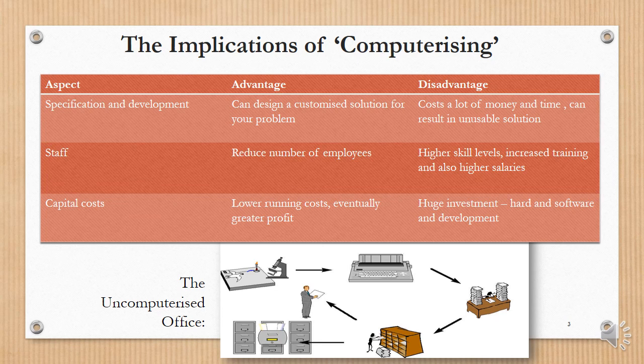In specification and development, when you want to buy a new computer system, you can design exactly what you want for your problem, which is a huge advantage. The disadvantage is that if you have a very specific problem that nobody else has thought of solving, it could cost a lot of money and time, especially if it needs to be developed for your needs.